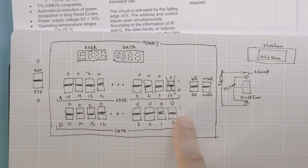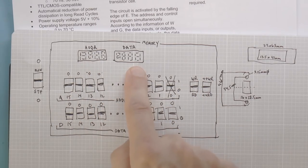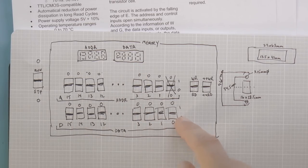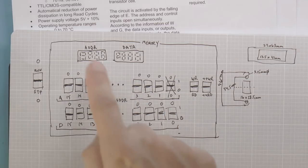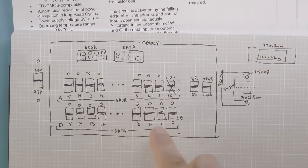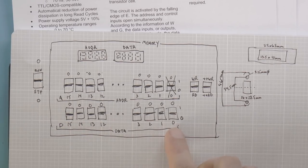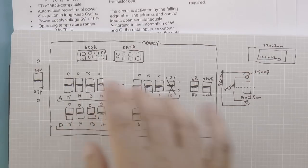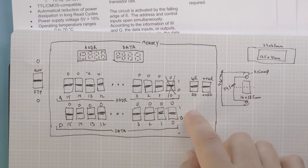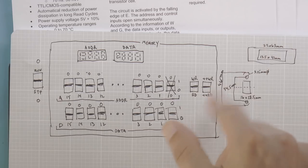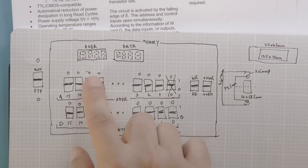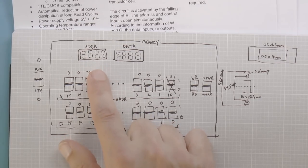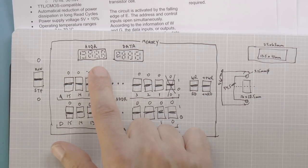Same thing with write: set up your address and data, flip write, and the address and data appear. Then set up the data and go plus-plus write to write to the next address. For example, if you wanted to load a bunch of zeros or FFs, you set up the address, set up the data, flip write, then flip plus-plus write several times to load that data into sequential addresses. The last written or read address is always displayed in the address window.